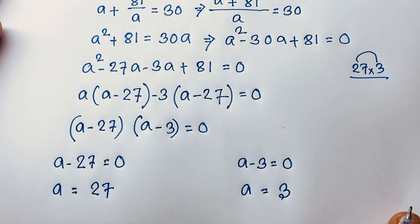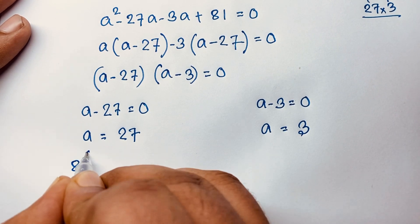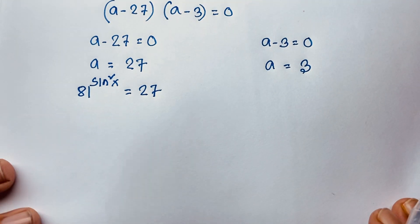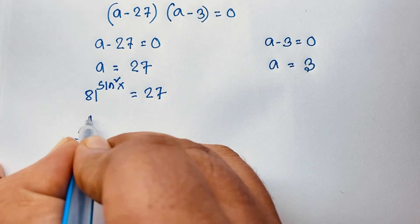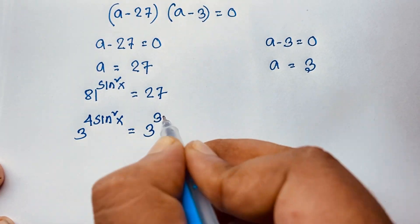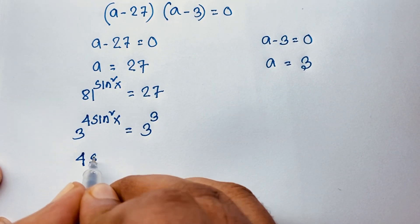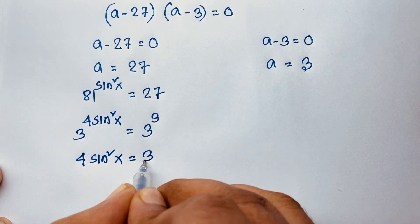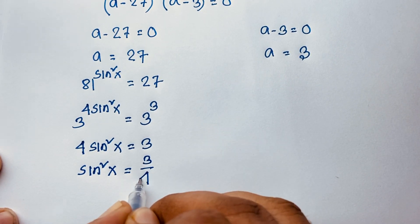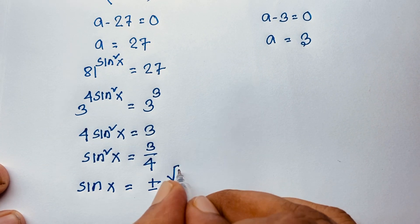Recall that a = 81^(sin²x). For the first case, a = 27: 81^(sin²x) = 27, which is (3⁴)^(sin²x) = 3³, so 4·sin²x = 3, giving sin²x = 3/4. Taking the square root: sinx = ±√3/2.